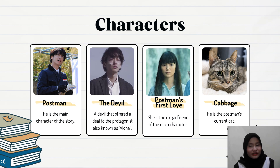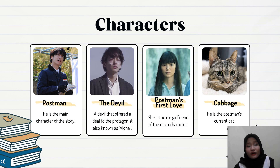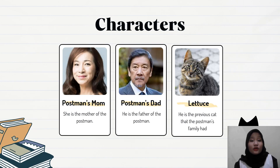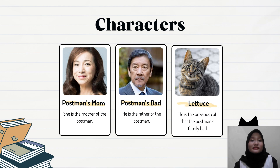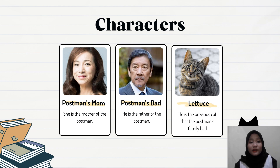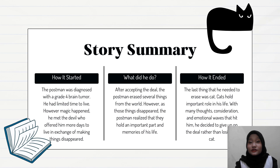The next character is the postman's first love, his ex-girlfriend that he broke up with a while ago. Then we have Cabbage, the name of the postman's cat that he currently has. For supporting characters, we have the postman's mom, who is a very close figure for the postman — he loved her very much. Next is the postman's dad; they don't really have a close relationship and don't talk much after the postman's mom died. And last but not least, we have Lettuce, the cat of the postman's family that they had before Cabbage.